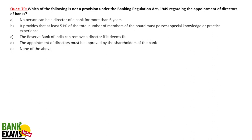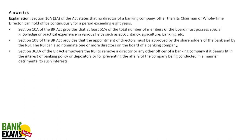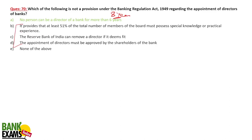Which of the following is NOT a provision under the Banking Regulation Act 1949 regarding the appointment of directors of banks? The answer is: no person can be a director of a bank for more than eight years — that is the correct provision, making 'six years' the incorrect option. The other options are correct: at least 51% of board members must possess special knowledge in banking or finance; RBI can remove any director if it deems fit; and the appointment of directors must be approved by shareholders, per Section 10A(2a).